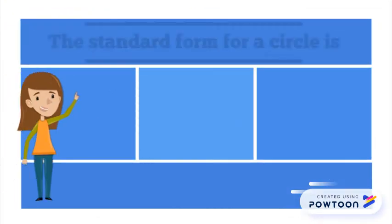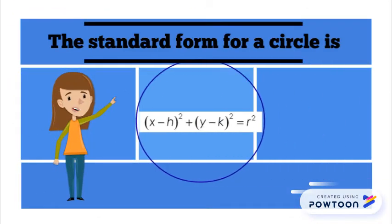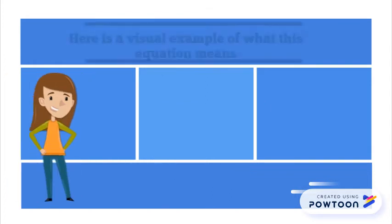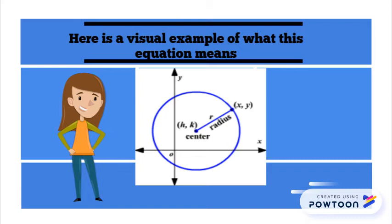How about we start with circles. The standard form for a circle is x minus h squared plus y minus k squared equals r squared. Here's a visual example of what that means. H and k stand for your center, and r for your radius.